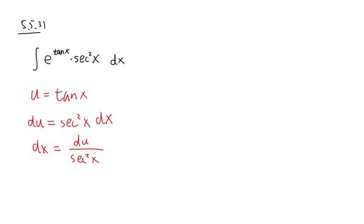So this integral is going to be the integral of e to the tangent x, which is the u power, so e to the u. And then after that, we still multiply by secant square x. And for the dx part,